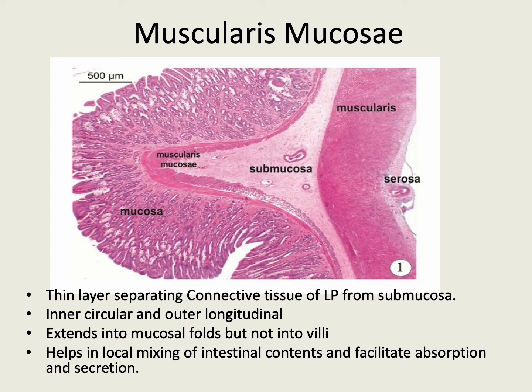Then we have the muscularis mucosae layer of the mucosa. It is a thin layer which separates the connective tissue of the lamina propria from the submucosa. It has an inner circular and outer longitudinal layer, and it extends into the mucosal folds but not into the villi. The muscularis mucosae helps in the mixing of intestinal contents to facilitate absorption and secretion.